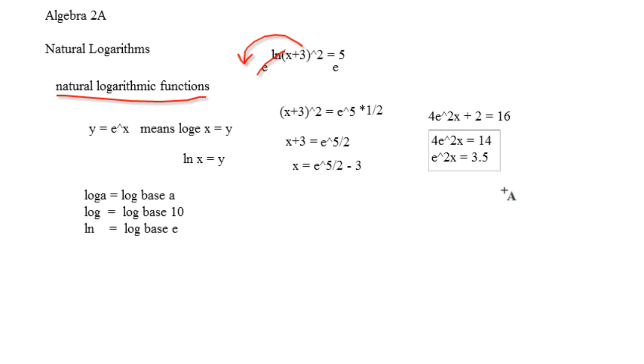Now what I can do is, in order to get this one down, I can do the natural log of both sides. I would do the natural log of both sides, because the natural log of e cancels out to 1, and I can bring this down to the 2x.